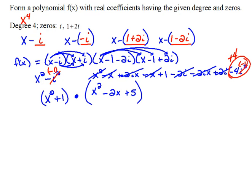In the last video, we had started off with our two zeros that were given. We found the others because of the complex conjugate. We wrote them as factors, and then we began doing our multiplication.